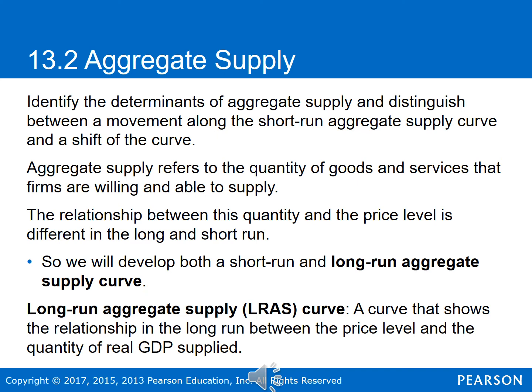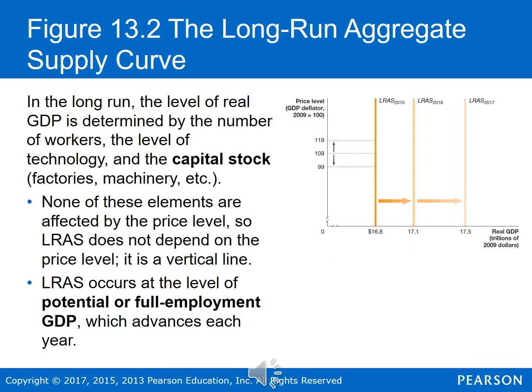Now that we've finished discussing aggregate demand, let's move on to aggregate supply, which shows the effect of changes in the price level on the quantity of goods and services that firms are willing and able to supply in the market. Because of the effect of changes in the price level, aggregate supply is very different in the short run from what it is in the long run, so we're going to use two aggregate supply curves — one for the short run and one for the long run. The long run aggregate supply curve shows the relationship in the long run between the price level and the quantity of real GDP supplied. In the long run, the level of real GDP is determined by the number of workers, the level of technology, and the capital stock — meaning factories, machinery, and those sorts of things that go into production. None of these elements are affected by the price level, so in the long run the aggregate supply curve is vertical.